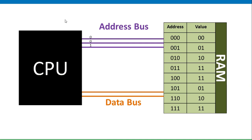The CPU sends the address it's interested in down the address bus to the RAM, and then the RAM returns whatever value is stored in that location back to the CPU. You can see in this video my address bus has got three lines. A bus is basically a collection of lines — wires — between one component and another. Each wire can carry only one signal: on or off. That's why the address bus, for example, is three bits wide — it's carrying three bits.